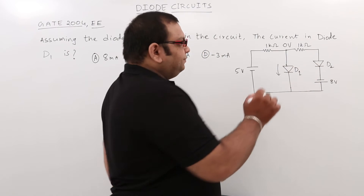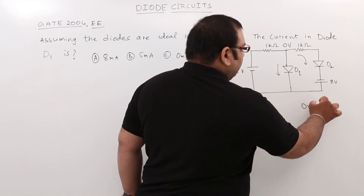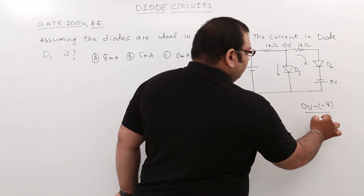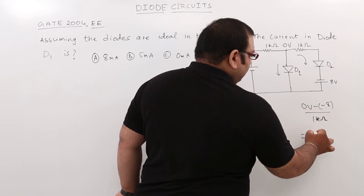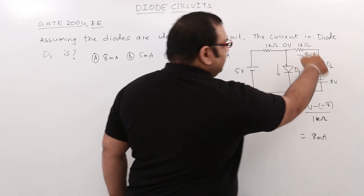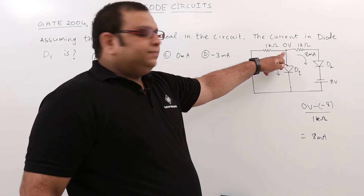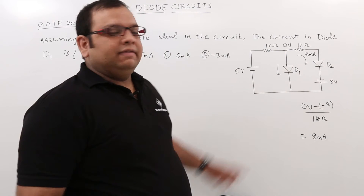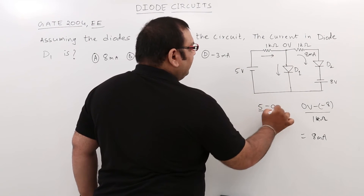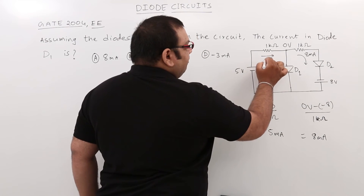When D2 is forward biased, the current through D2's branch is 0 volts minus (minus 8) divided by 1 kilo ohm, which gives 8 milliamperes. The current through the 5V branch is 5 minus 0 divided by 1 kilo ohm, which gives 5 milliamperes.